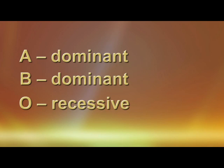The genetics of the ABO system are very important to understand. The A and the B gene are both dominant over the recessive O gene, and the A and B genes are codominant.